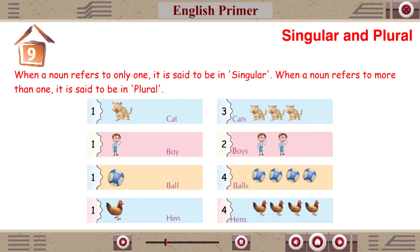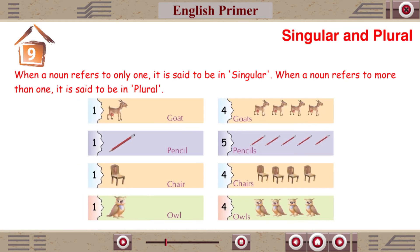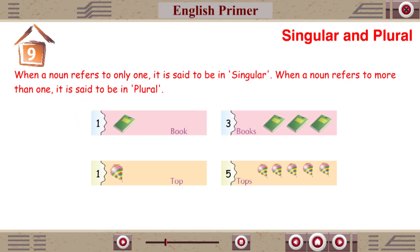One ball, four balls. One hen, four hens. One goat, four goats. One pencil, five pencils. One chair, four chairs. One owl, four owls. One book, three books. One top, five tops.